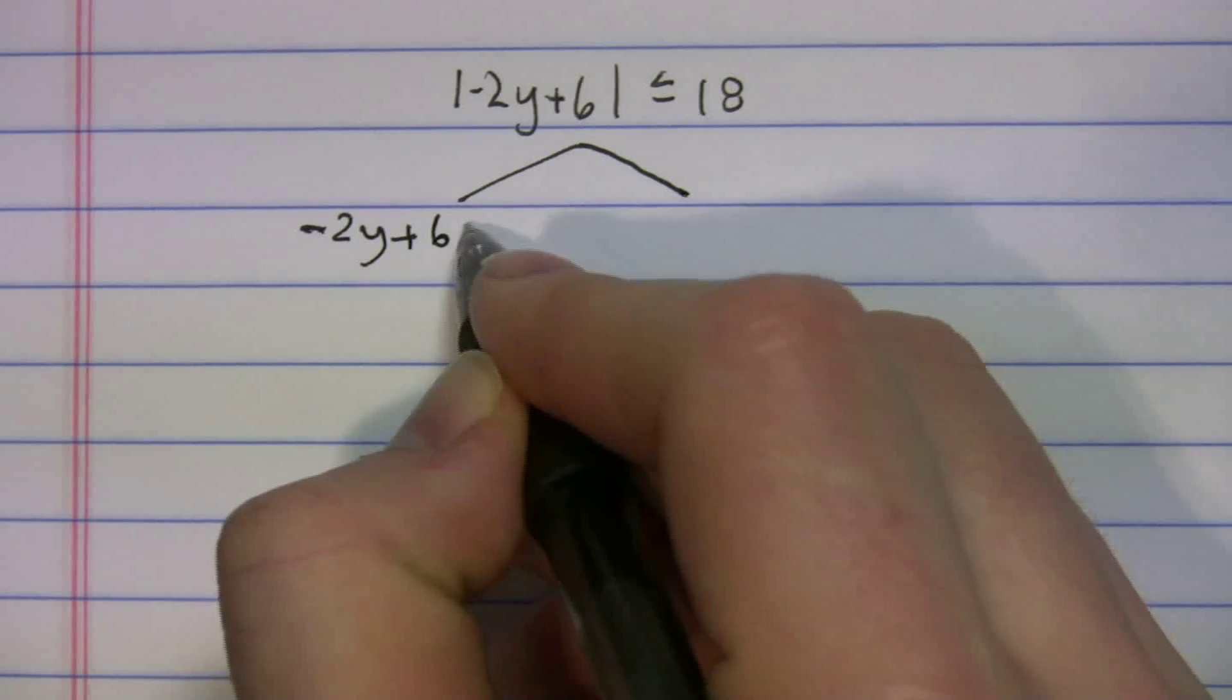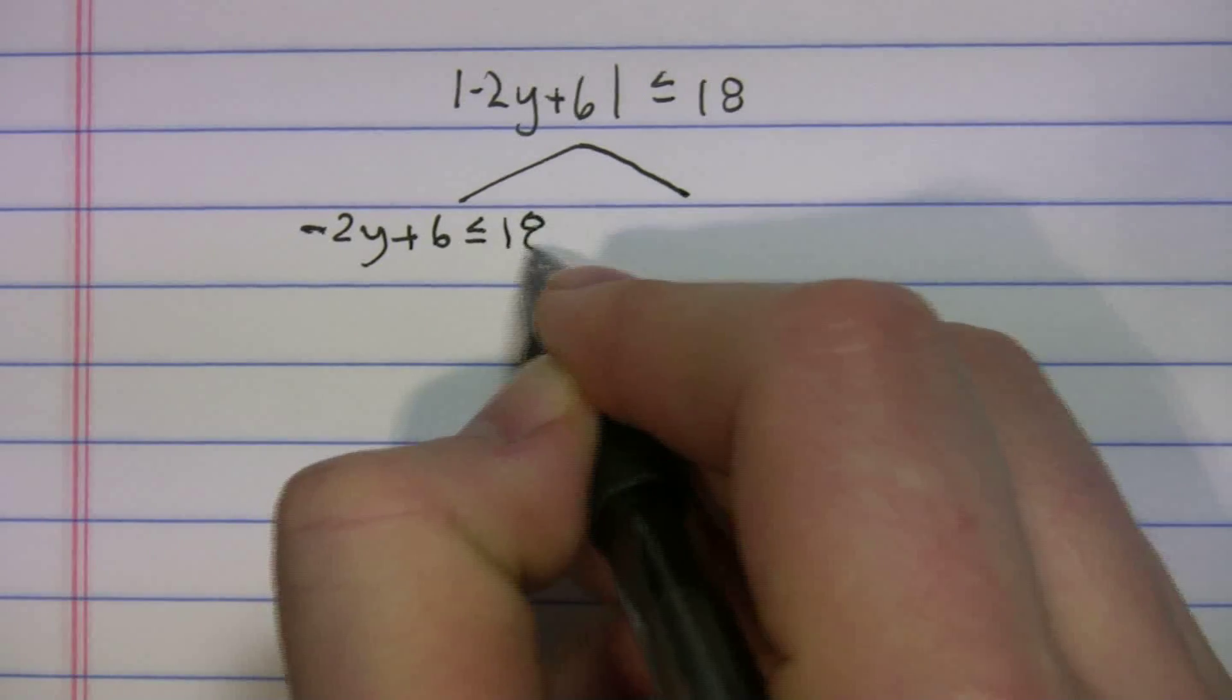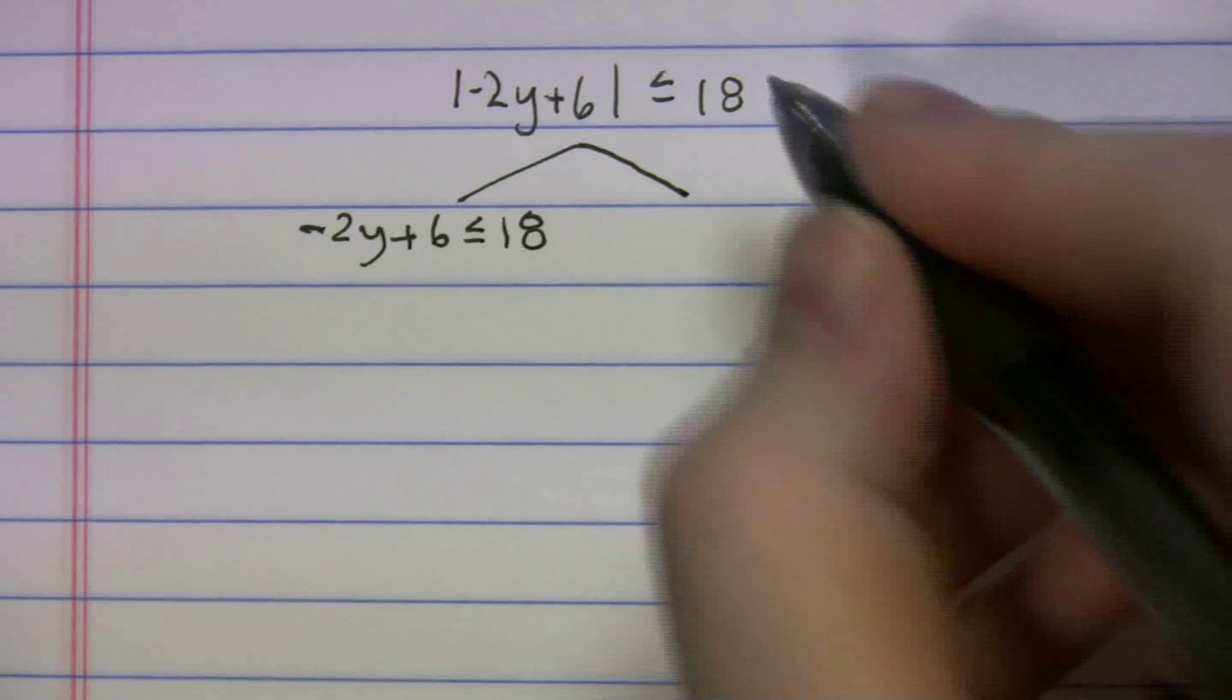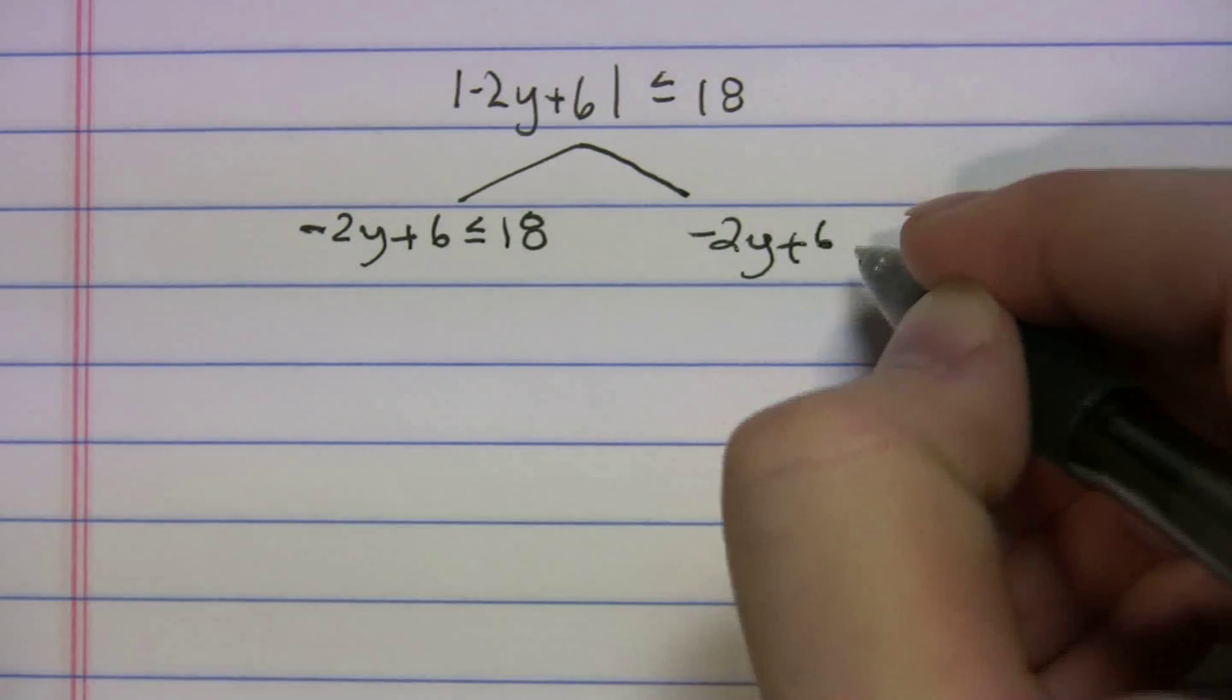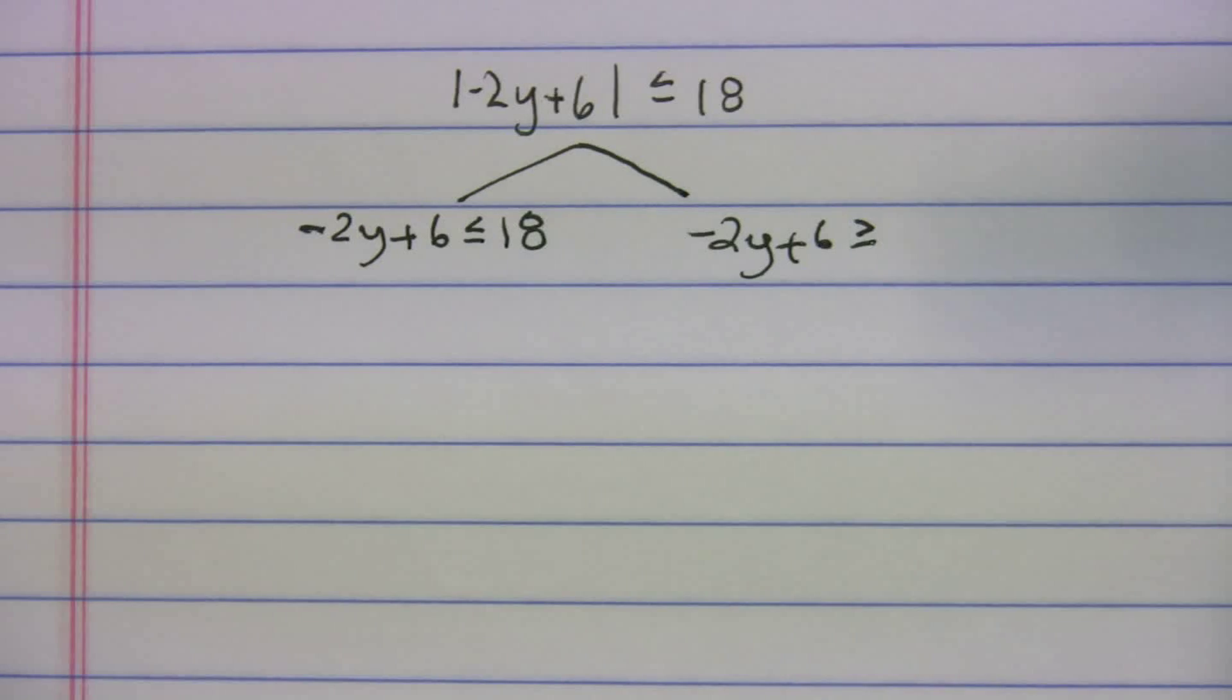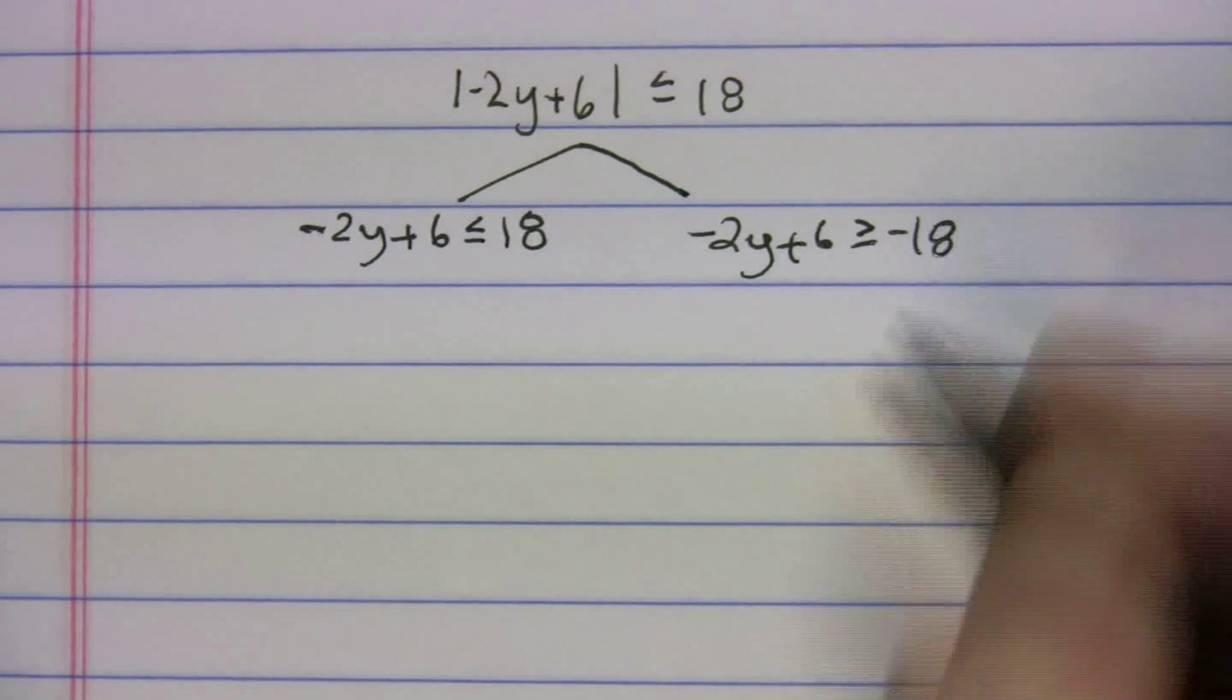|-2y + 6| is less than or equal to 18. And then we'll do -2y + 6. And we have to flip the sign because we're doing the negative number.